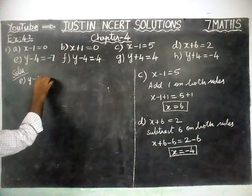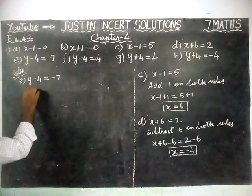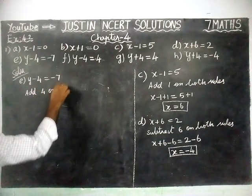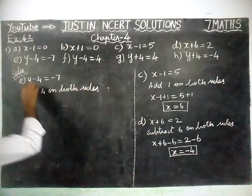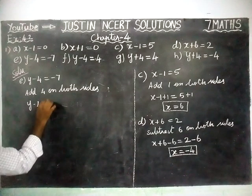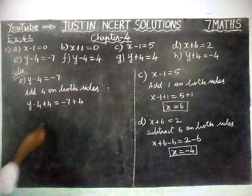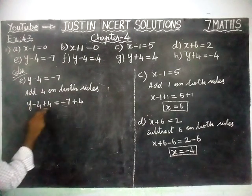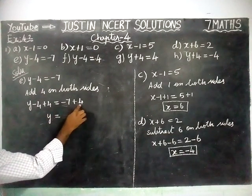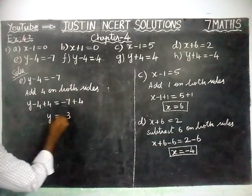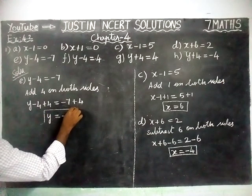Next option E: y minus 4 is equal to minus 7. Here we have to cancel this minus 4, so we are going to add 4 on both sides. y minus 4 plus 4 is equal to minus 7 plus 4. Minus 4 plus 4 gets cancelled. y is equal to minus 7 plus 4. Signs are different, difference is 3 and the greatest number is 7 with a minus sign, so y equal to minus 3.